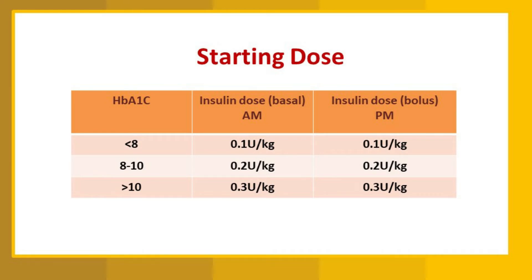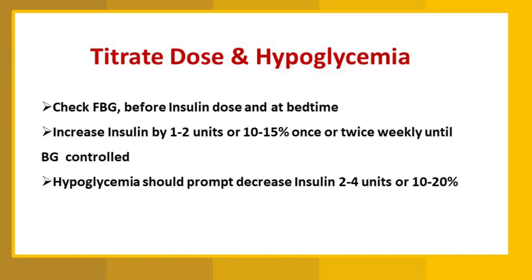If HbA1c is 8–10%, start at 0.2 units/kg; if greater than 10%, start at 0.3 units/kg. After that, we titrate the dose by checking fasting blood glucose after one to two weeks. If after starting the initial dose the patient's blood glucose levels are still not under control, we can increase the insulin dose by one to two units.